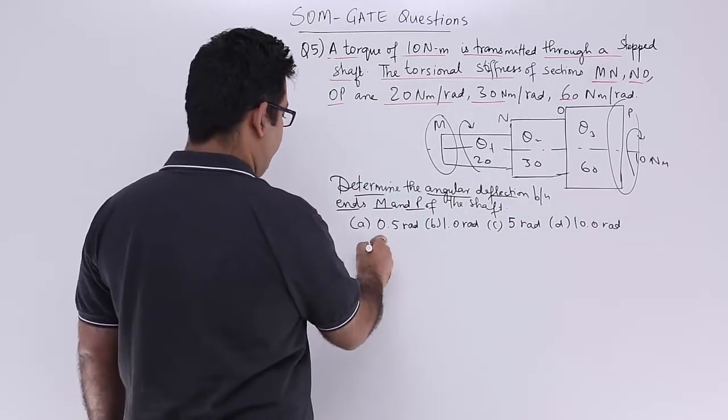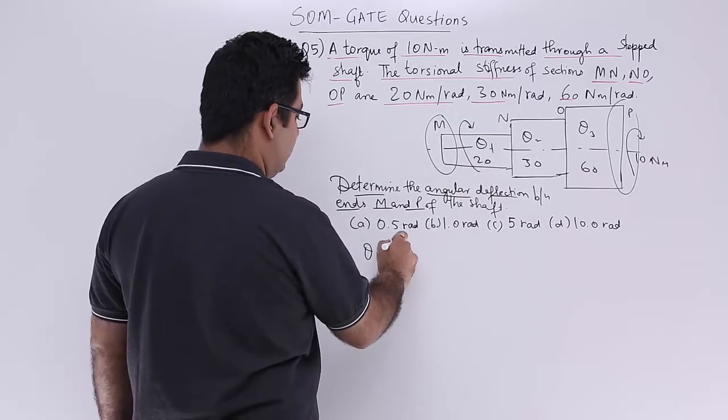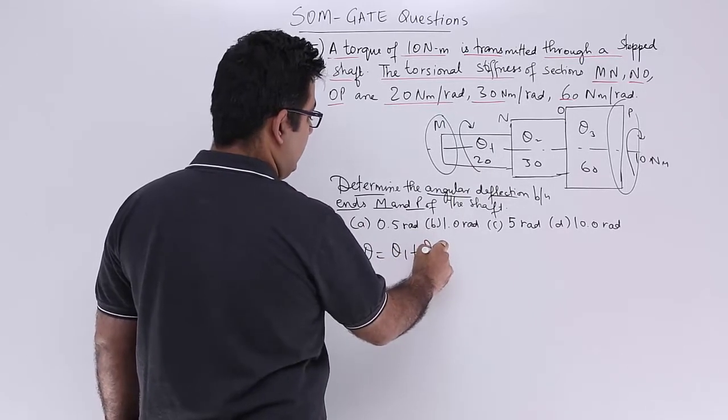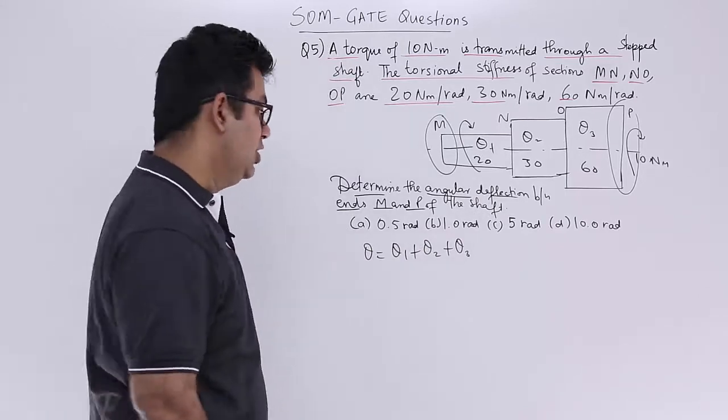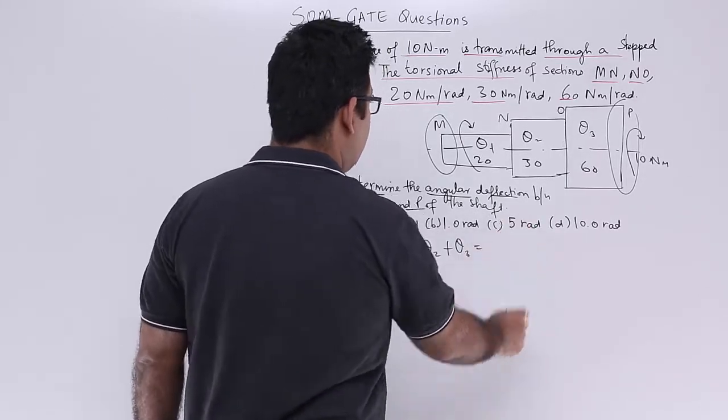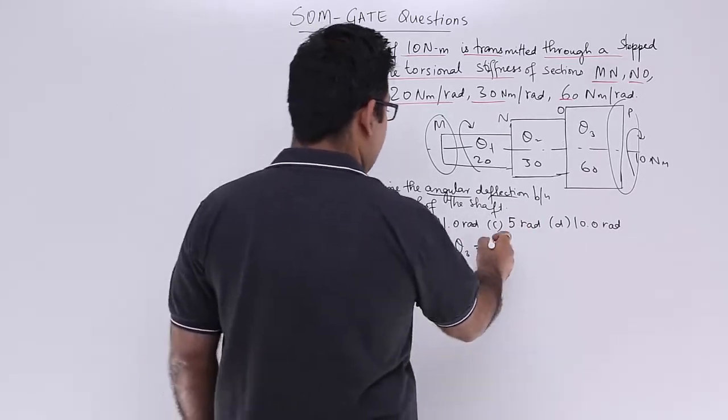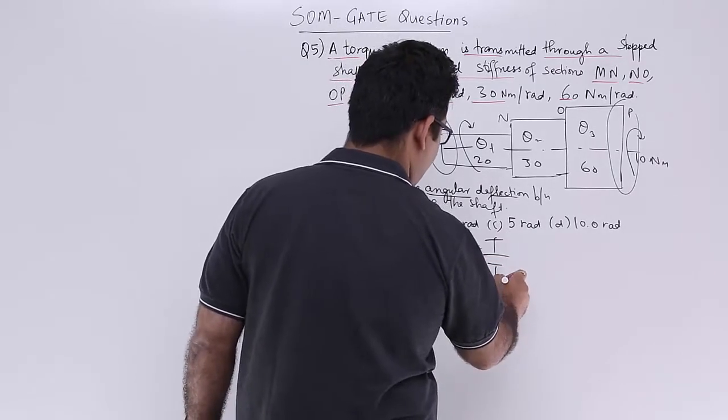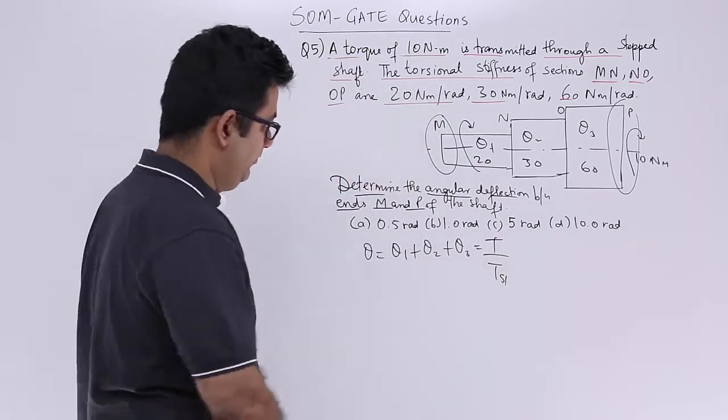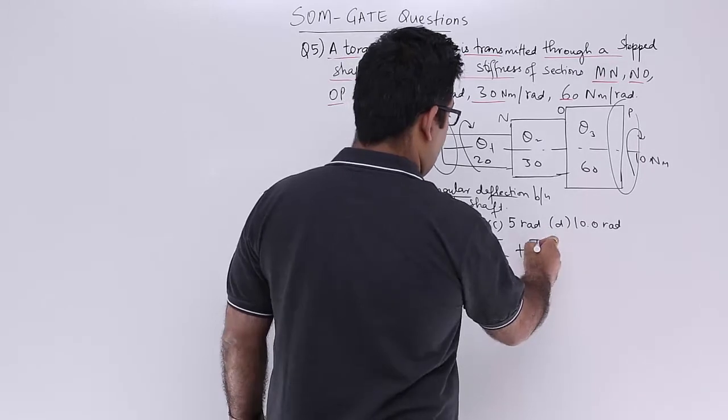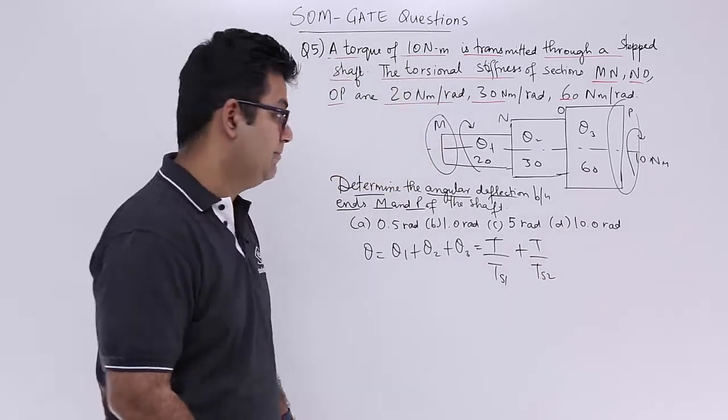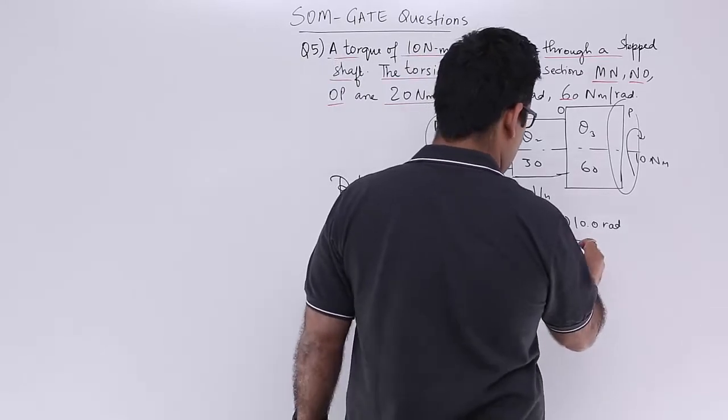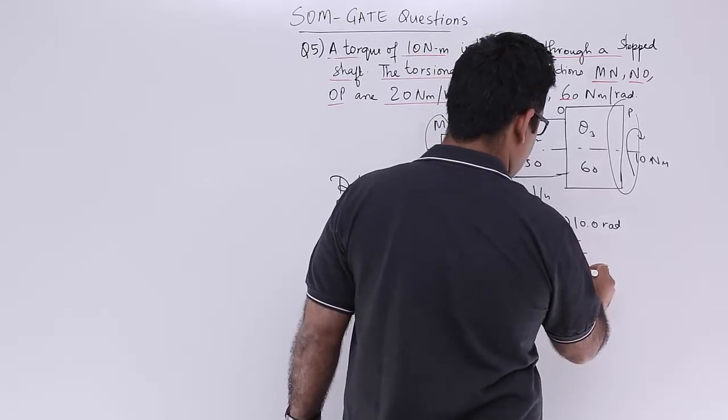So what is theta for the compounded shaft? It's theta 1 plus theta 2 plus theta 3. So what is theta 1 equal to? Theta 1 is equal to the torque upon the torsional stiffness for the first section...